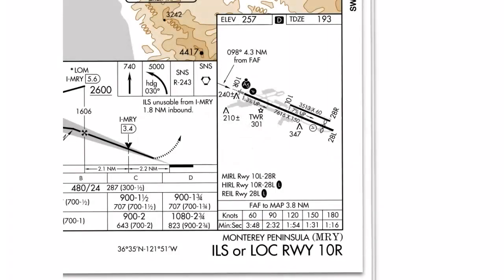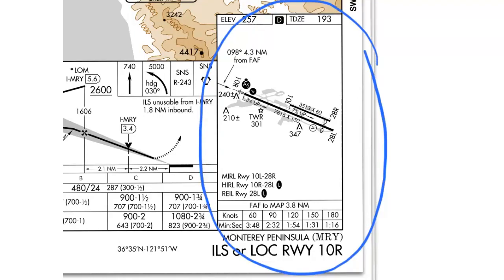Hello, everyone. In this lesson, we're going to look at the airport diagram section of an instrument approach chart. The airport diagram section is one of the most important sections on the chart, since it tells you almost everything you need to know about the airport. It includes its runway configuration, taxiway layout, lengths of the runways, services, lighting, etc. Almost everything there has some value as you come in to land.